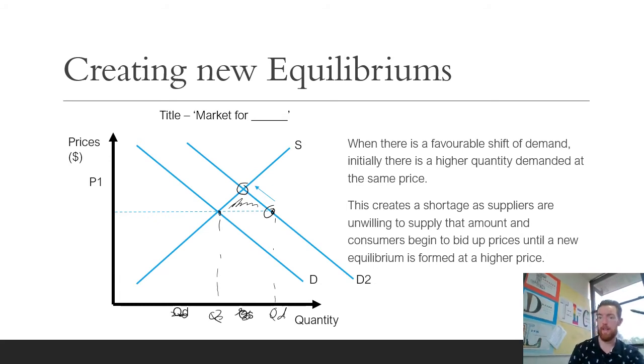VCE exams often have questions like explain how a new equilibrium is formed or explain one factor that could cause a favorable shift in demand and explain how a new equilibrium is formed and draw it on the axis provided. You get one mark for doing the new demand line, one mark for your factor, and then two marks for your description of how a new equilibrium is formed. A lot of people can't do this last step and that's what we're talking about here.